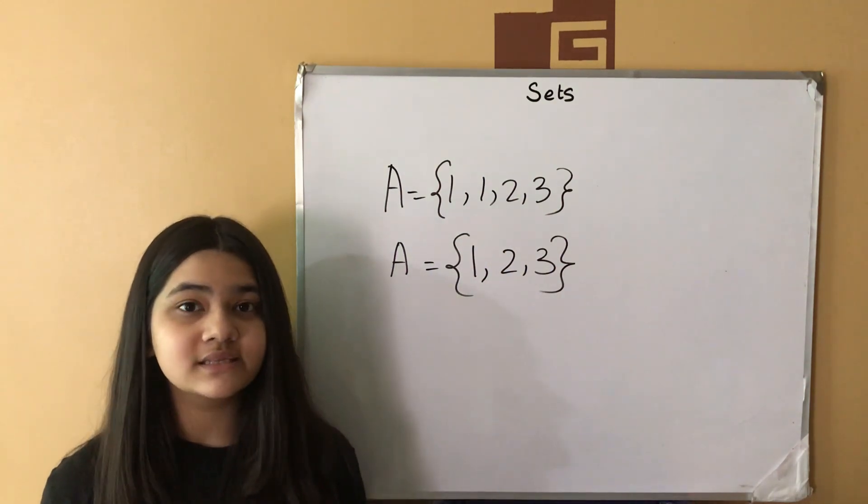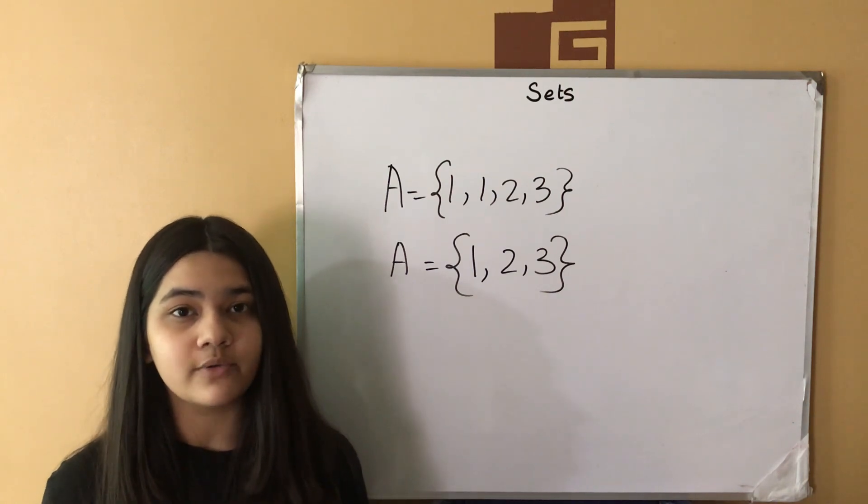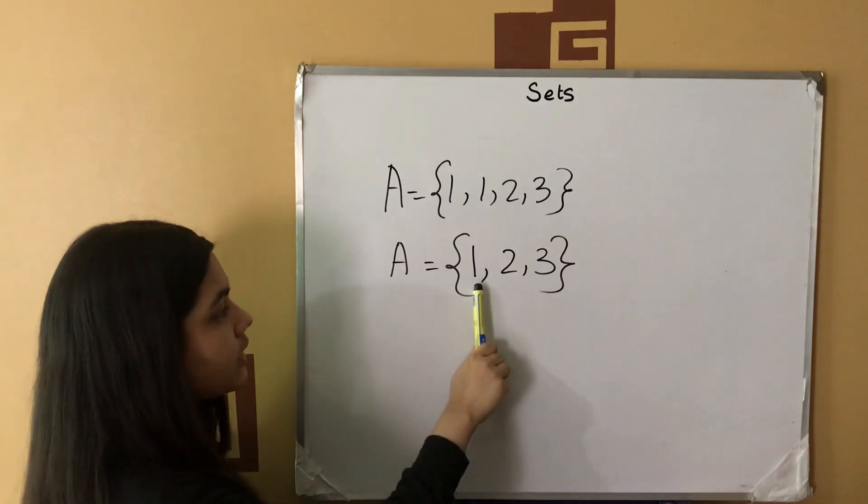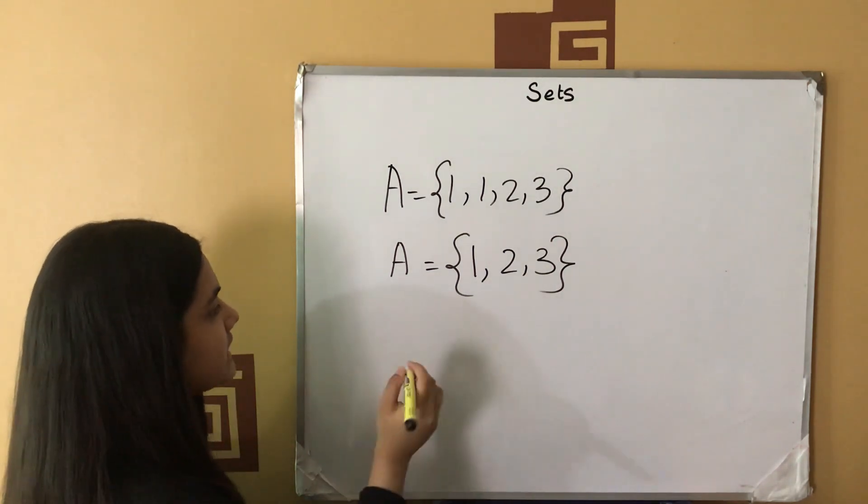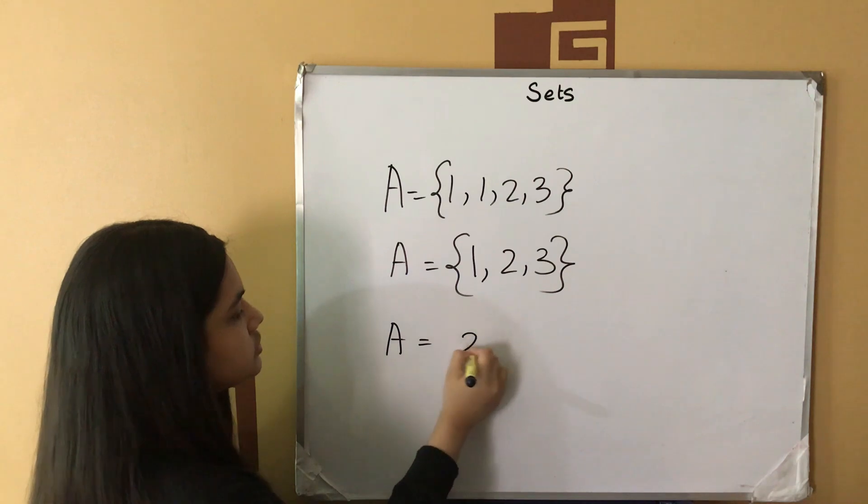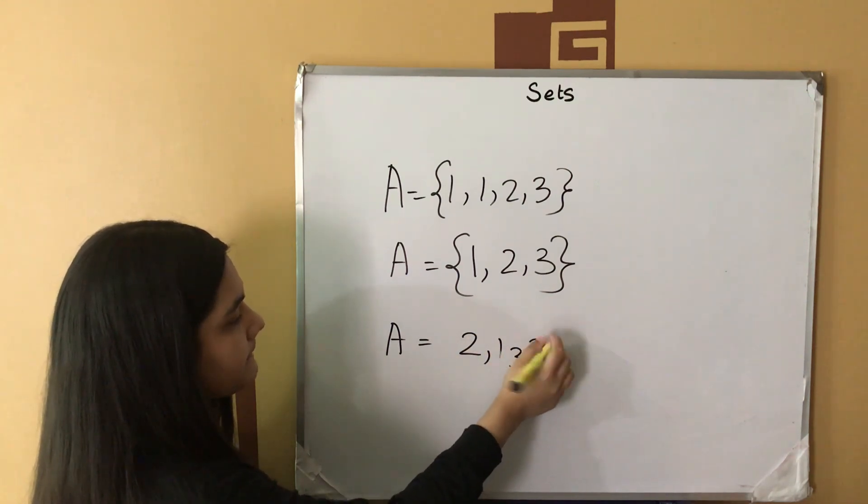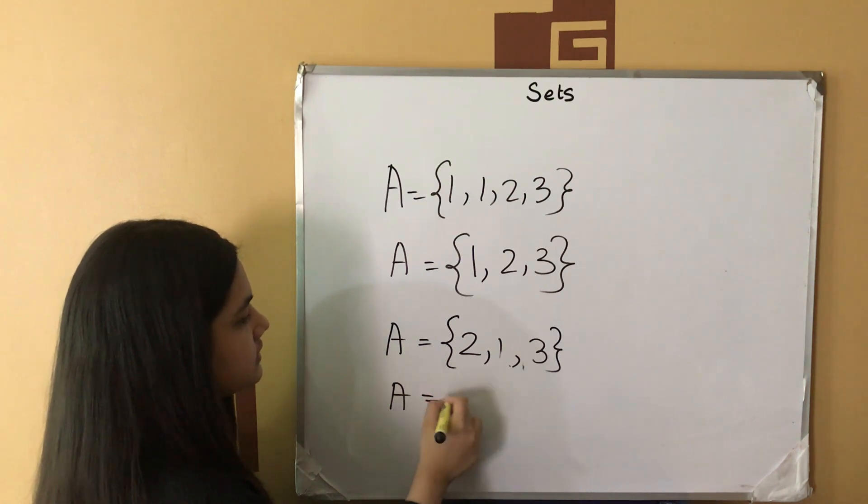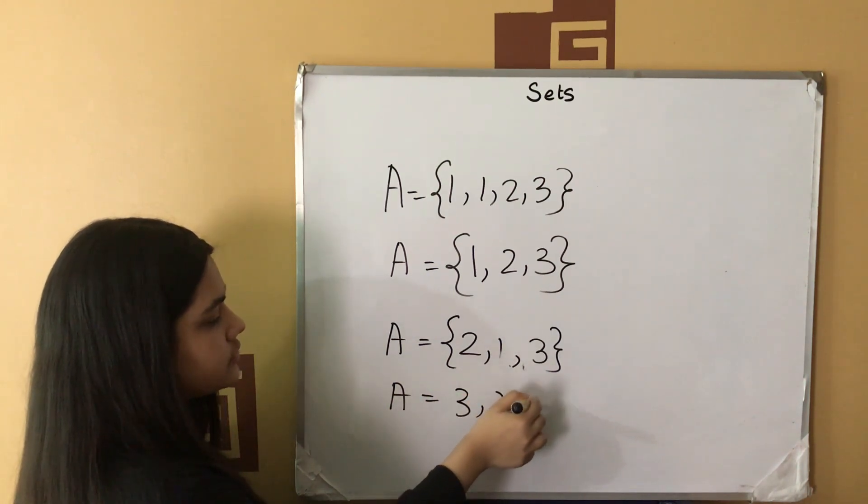And also in sets, there is no order in writing the elements. Set A containing the elements 1, 2 and 3 is the same as set A containing the elements 2, 1, 3, and set A containing 3, 2, 1.